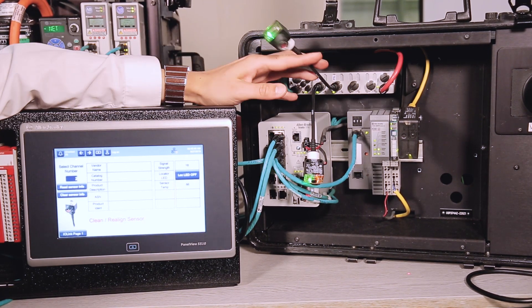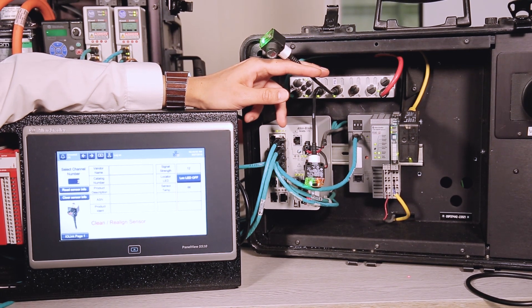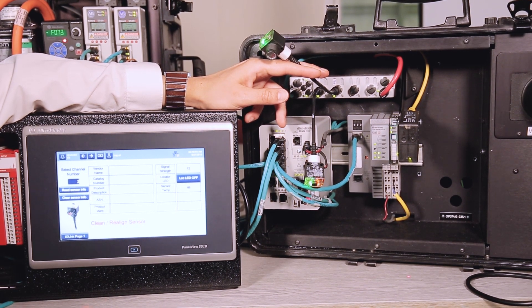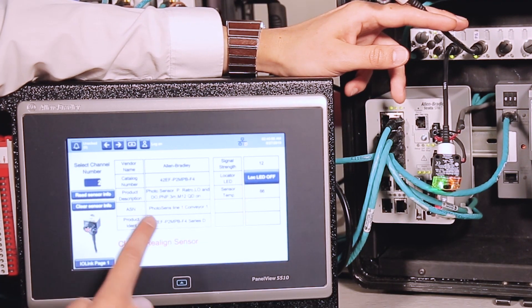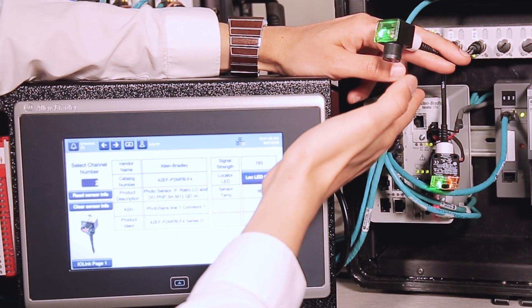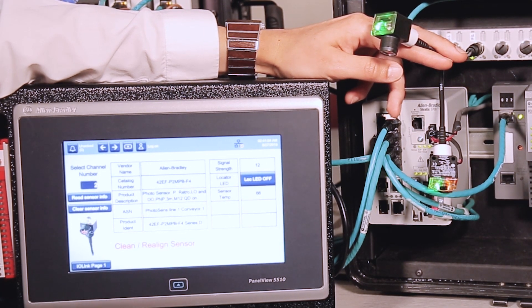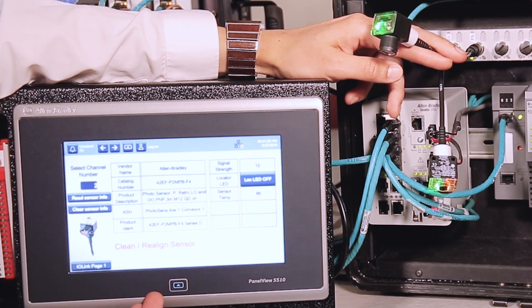So here we have a photoelectric sensor which is sat on IO-Link. We can take all the sensor information out of that, which includes the vendor, the catalogue number, product description. We also take the signal strength of the sensor as well, and this allows us to do such things as make people aware of when a sensor has either gone out of alignment or might need cleaning.